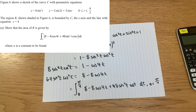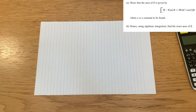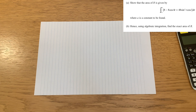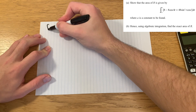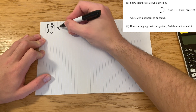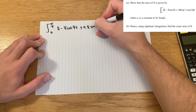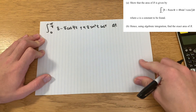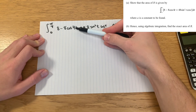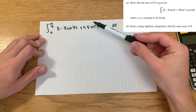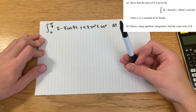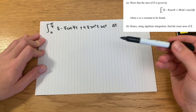Part b says: hence, using algebraic integration, find the exact area of R. An exact answer means no decimals — fractions, expressions involving pi, or surds are all fine. Even if you didn't get part a, you can still use the given integral for part b. We need to integrate 8 minus 8 cos 4t plus 48 sine squared t cos t. Integrating the constant 8 is straightforward, and with a good understanding of differentiation the last term is manageable too.